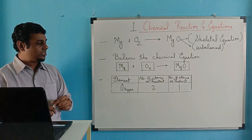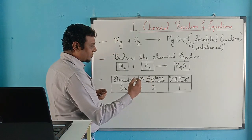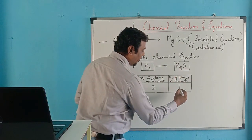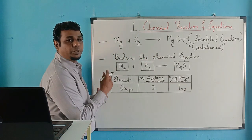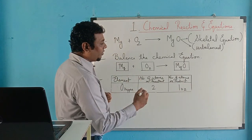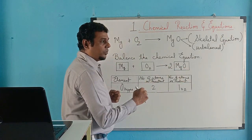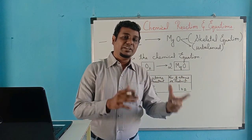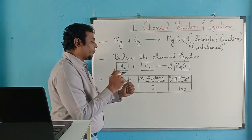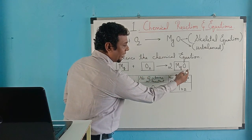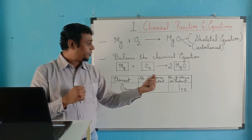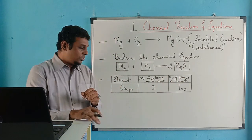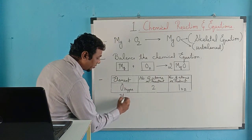So we need to balance the oxygen first. To make two atoms of oxygen in the product, we multiply by two in the product — which makes oxygen two. You cannot put a subscript two inside the formula, because that would change the compound entirely. Instead, we put the coefficient two in front of MgO. But now there is a new imbalance: in the product there are two magnesium atoms, while in the reactant there is only one magnesium.